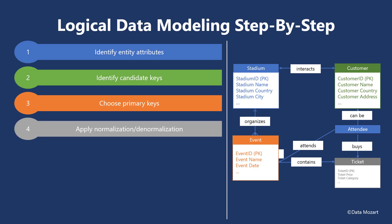Apply normalization or denormalization to the data model — we will discuss this in more detail in one of the next modules. For now, keep in mind that normalization should eliminate data redundancy and is typical for OLTP systems. On the other hand, denormalization is predominantly used in analytical systems or OLAP to minimize the impact of join operations and speed up data reading.